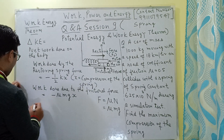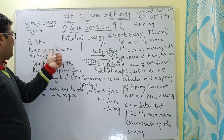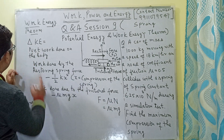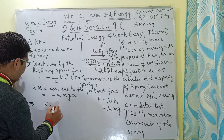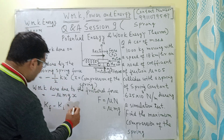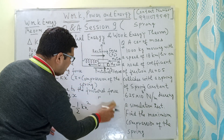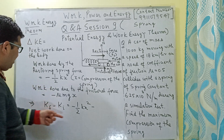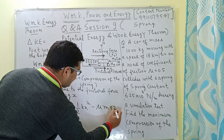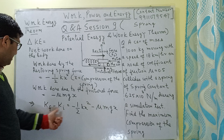Using the Work-Energy Theorem, the change in kinetic energy equals the net work done on the body. So I can write: final kinetic energy minus initial kinetic energy = −½kx² − μmgx. Now I need to find the initial and final kinetic energies.